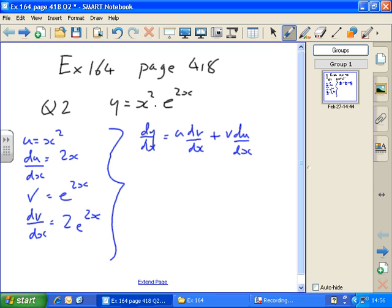Now we use the product rule. So dy by dx equals u, which is x squared, times dv by dx, which is 2e to the 2x, plus v, which is e to the 2x, times du by dx, which is 2x. This equals 2x squared e to the 2x